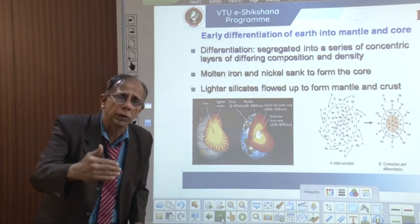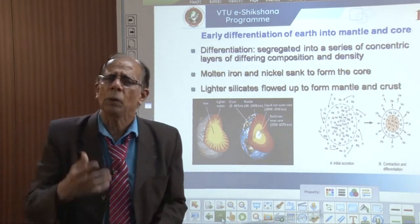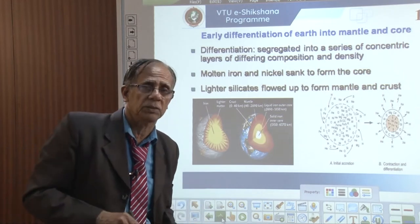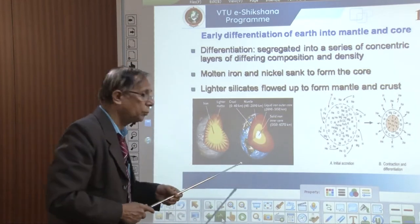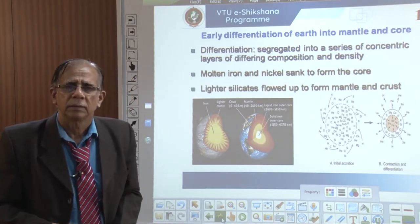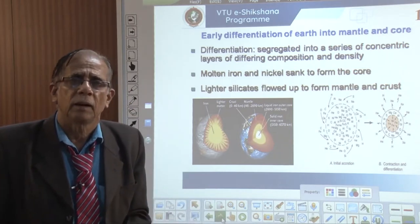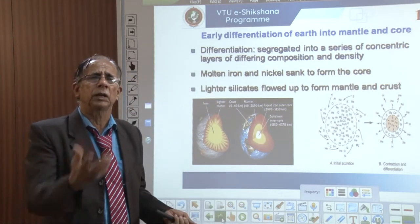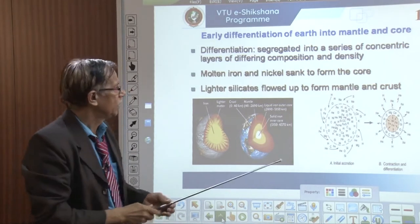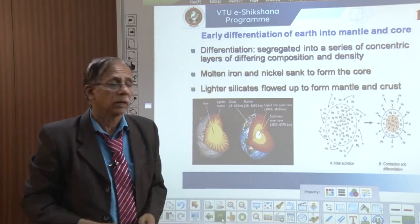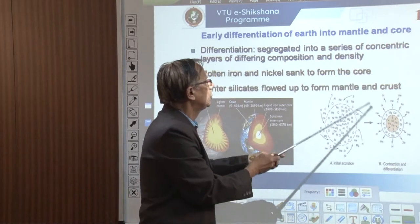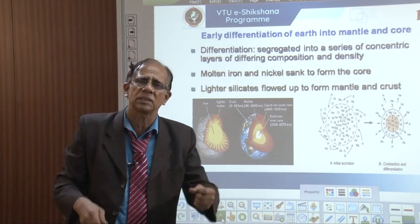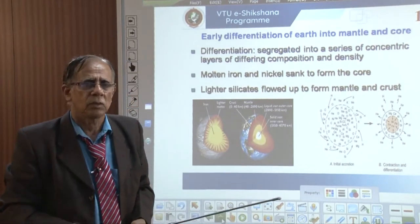For that, we must know the peculiar nature of earth's internal structure and composition. Before going deep into that, we need primary knowledge about how the earth formed and its implications. Earth, like any other planet, originated from the sun. There was a hot ball of gas; a passing star pulled mass from the sun's atmosphere, and these gases gradually cooled, condensed, and formed the planets.